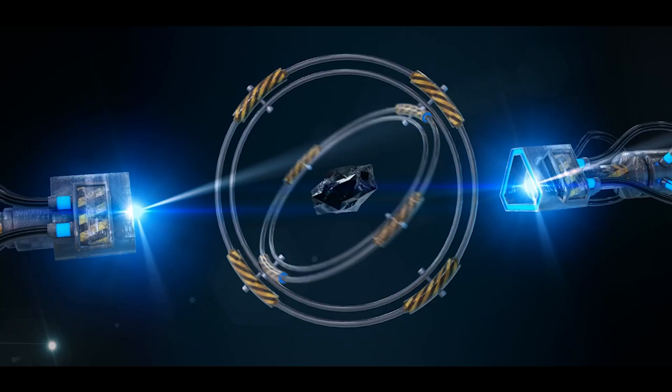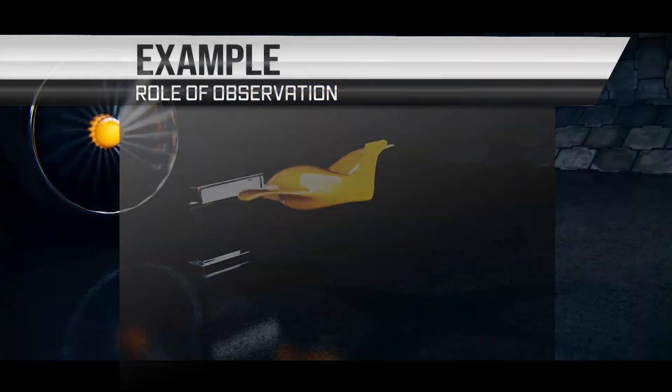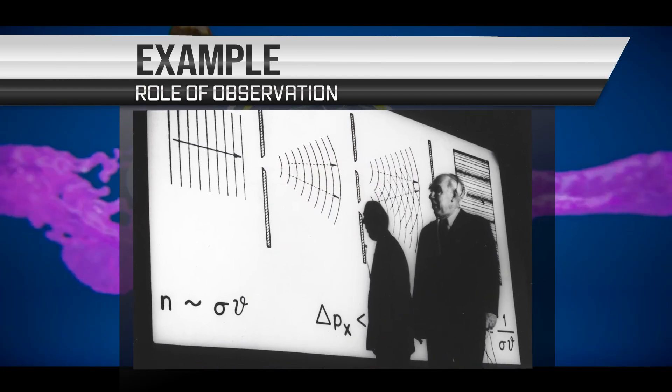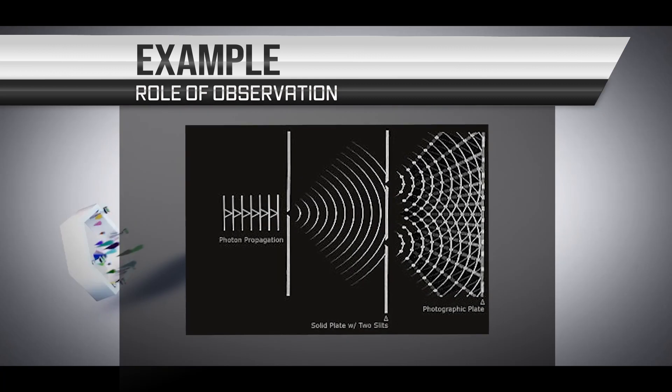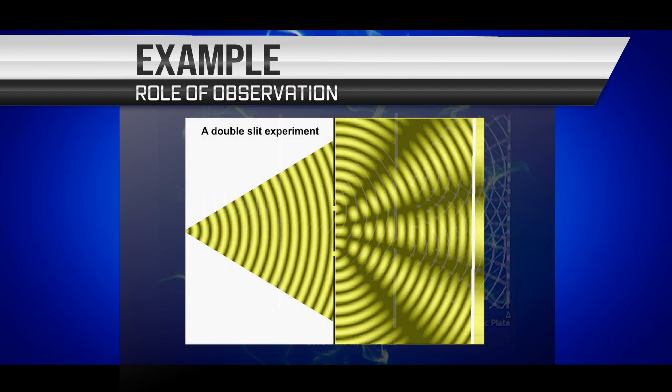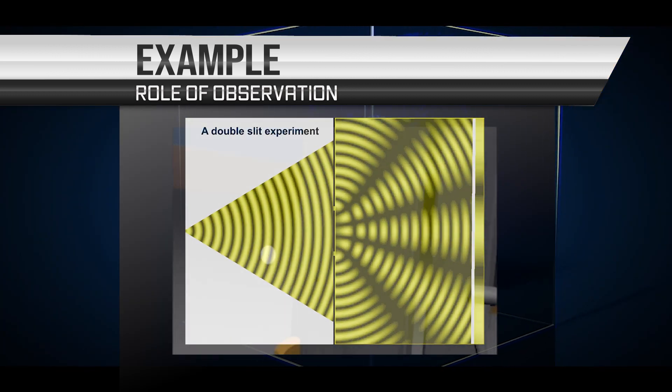One way to understand the role of observation in quantum physics is to consider the example of the double slit experiment, in which a beam of light is shown through two narrow slits and creates an interference pattern on a screen behind the slits. This interference pattern is characteristic of waves and is usually observed when light is shown through two slits.